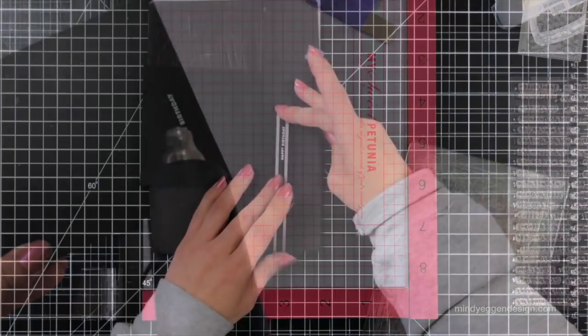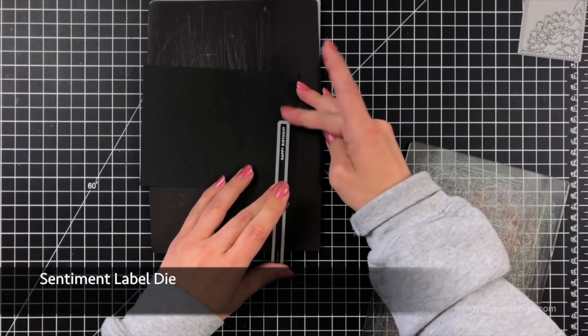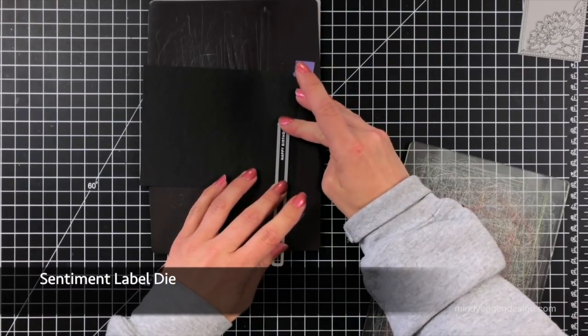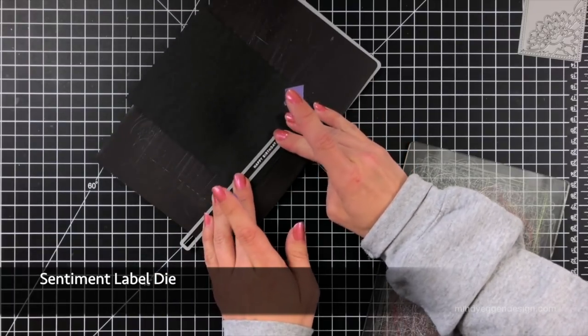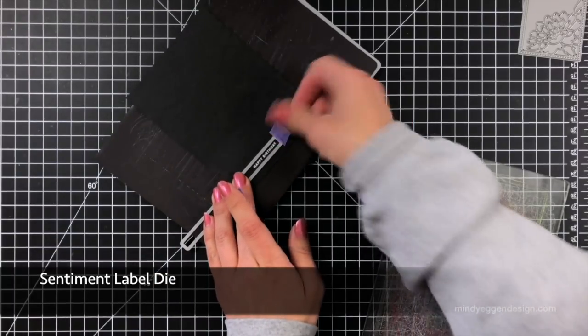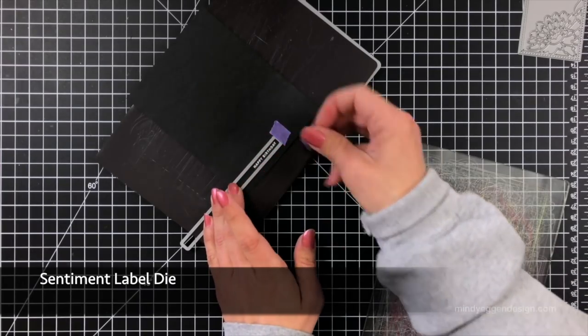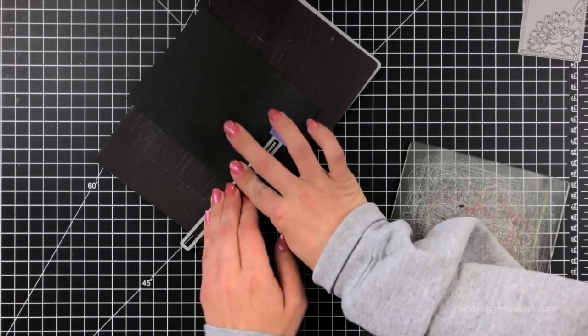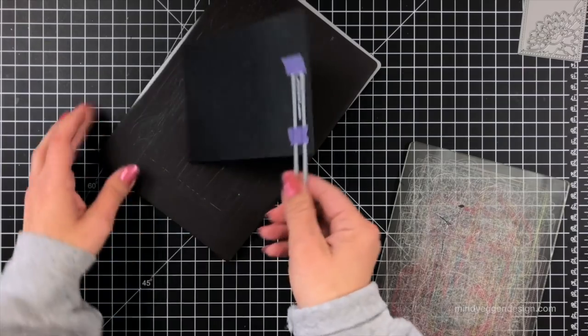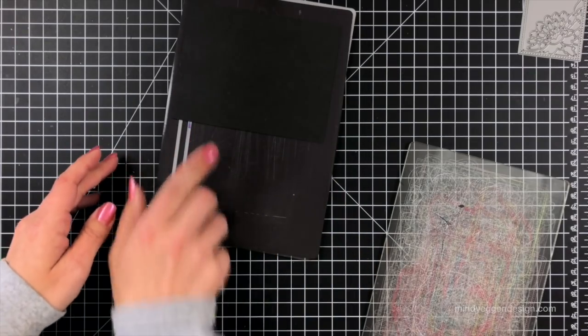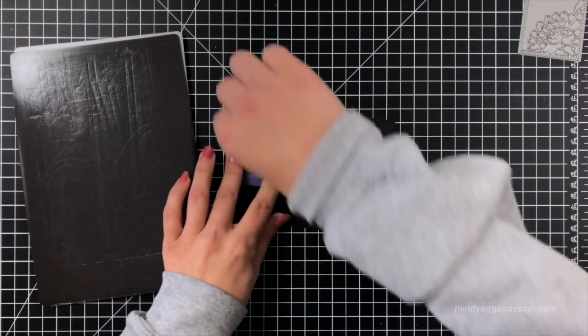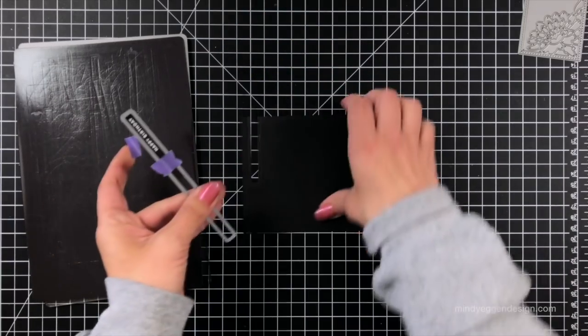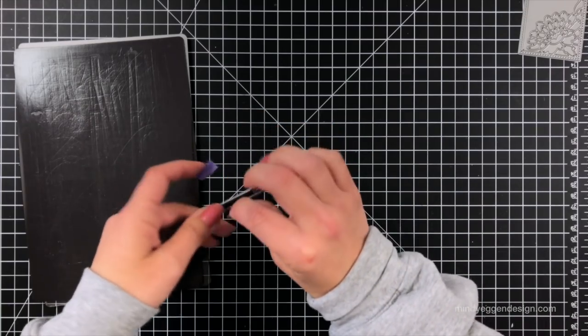For my sentiment I'm going to cut this out using the Sentiment Labels die. This is definitely a go-to favorite die of mine. I'm constantly using it because I can get a nice even cut. And I love the kind of rounded edges it gives. It's not as if I were to cut with my paper trimmer. They're kind of sharp edges. They're not as clean cut. So this is just a preference of mine. It's definitely a go-to and worth the time that it takes to flip this around and just make sure I have some nice clean edges.